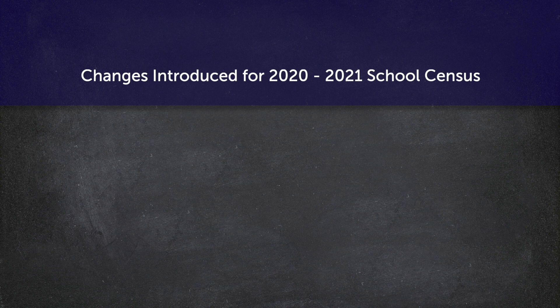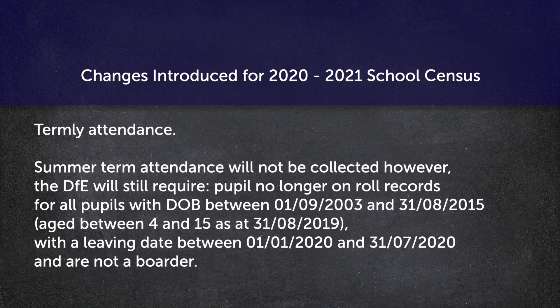These are the changes introduced for the 2020 to 2021 school census. Regarding termly attendance: summer term attendance will not be collected; however, the Department of Education will still require 'people no longer on roll' records for all pupils with a date of birth between the 1st of September 2003 and the 31st of August 2015, aged between 4 and 15 as of the 31st of August 2019, with a leaving date between the 1st of January 2020 and the 31st of July 2020, and who are not boarders.